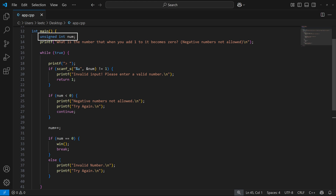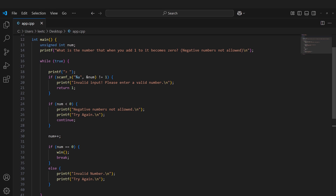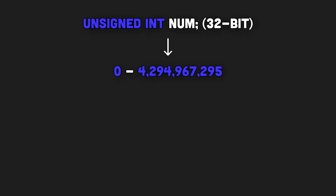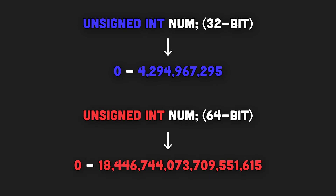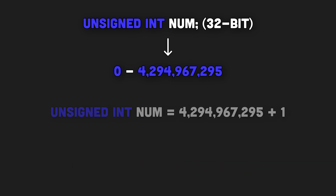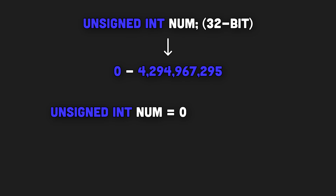The bug here lies in the first line of the main function — this definition. In C, unsigned integers can store a range of numbers based on the program architecture. For example, this is the range of numbers that can be stored in a 32-bit unsigned integer, and this is the range for a 64-bit unsigned integer. When we enter any number that is greater than the maximum number that can be stored, it overflows or wraps around to zero.